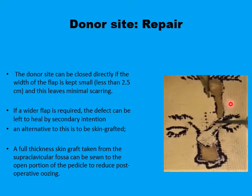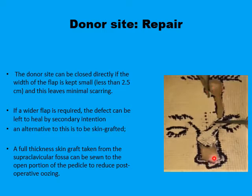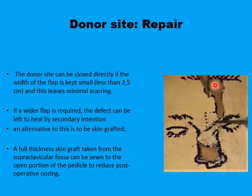Repair of the donor site requires ample undermining in the plane superficial to the periosteum but under the frontalis muscle. This allows primary closure, at least in the proximal part of the flap where the pedicle width was below 15 mm. In the distal part of the flap, if more than 2.5 cm was taken, some parts can be left to granulate, or an A-to-T type plasty can be used by mobilizing skin from both sides below the hairline for primary closure. Very occasionally, free grafts are used to cover this area if it is very large. The undersurface of the flap, which remains raw, can be covered by a small full-thickness skin graft taken from the supraclavicular fossa.